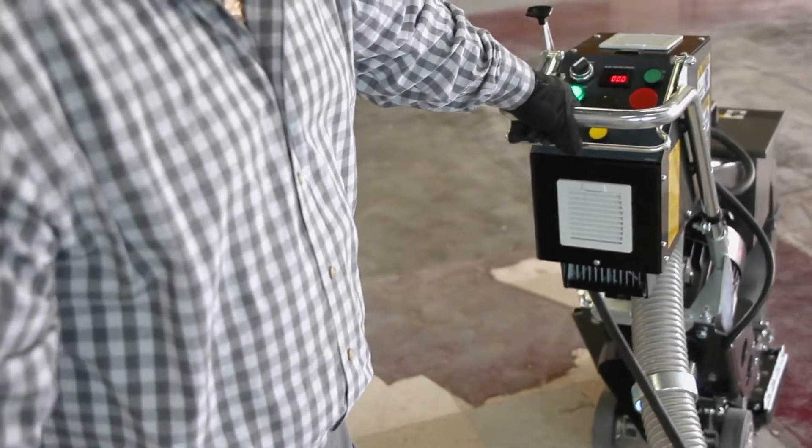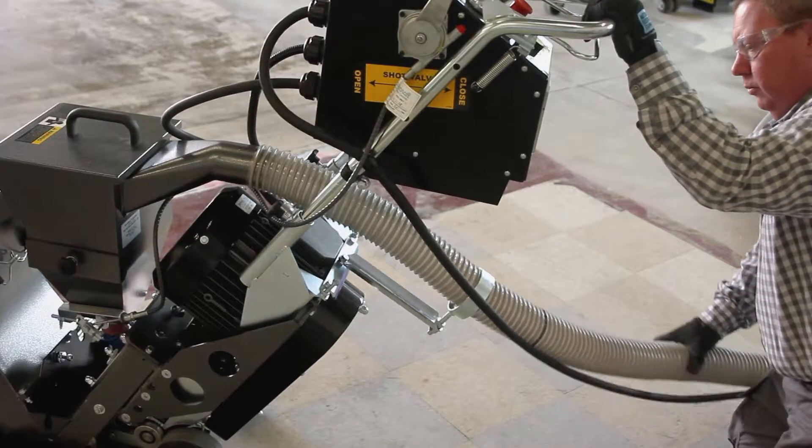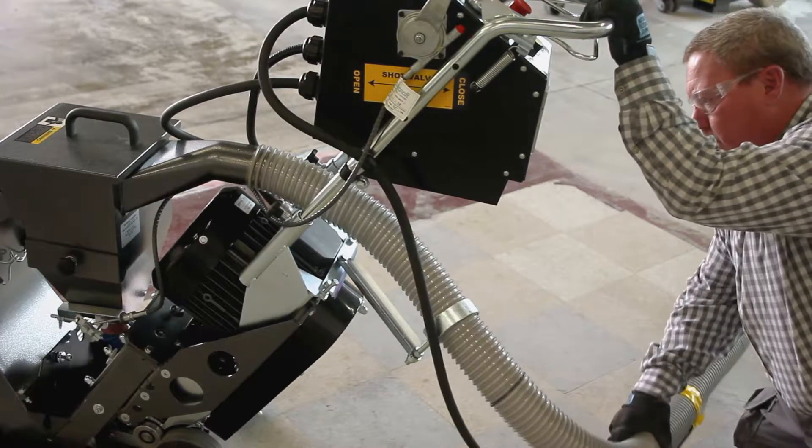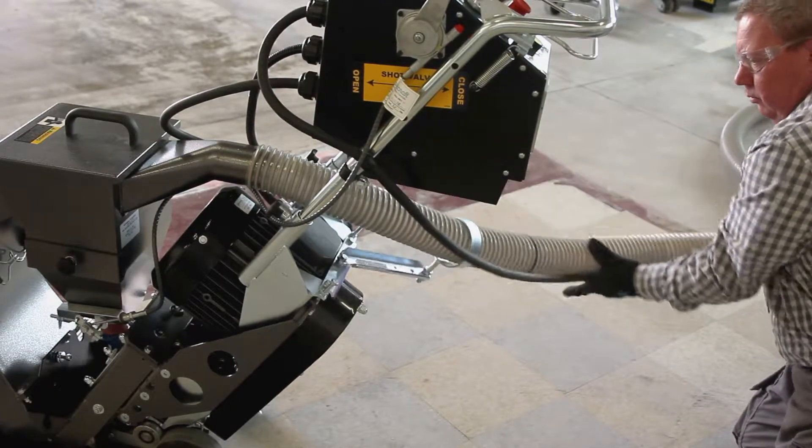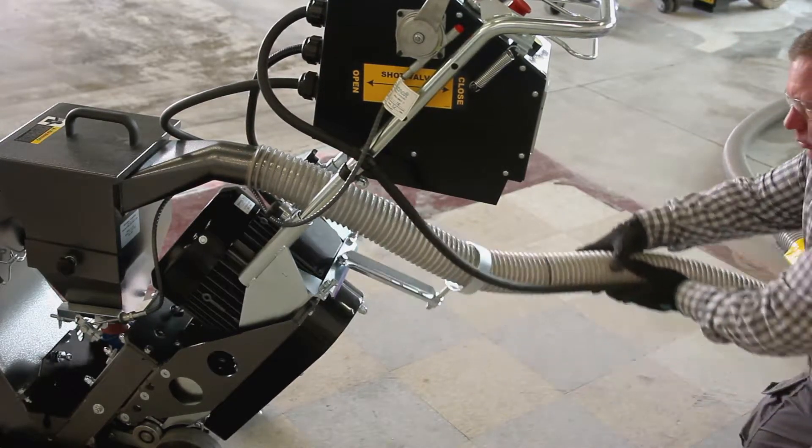As you can see here, the power cord and the hose to the dust collector are on a swivel to ensure safe and easy operation by keeping both of them away from the machine travel path.